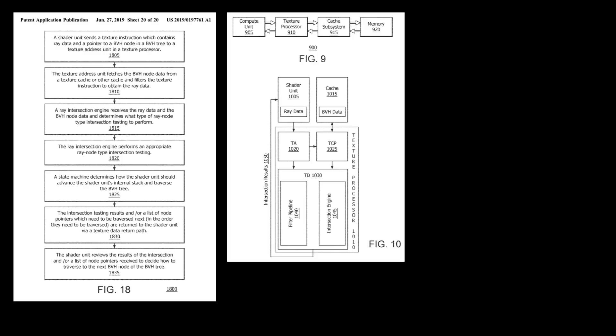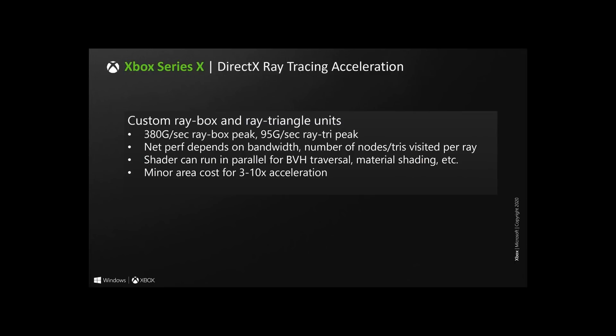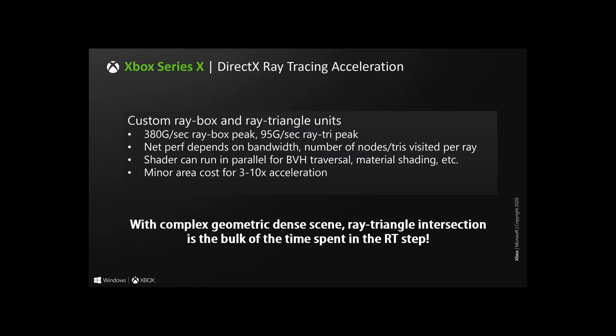The redesigned TMUs are now called texture processors, and each of them can accelerate 4 ray ops per clock. Looking at the Series X, Microsoft claims a peak performance of 380 giga ray box and 95 giga ray triangles per second. This figure derives from each compute unit having 4 texture processors, with 52 compute units clocked at 1.825 GHz. A simple multiplication arrives at the 380 giga ray box figure. However, a ray triangle intersection calculation is much more intensive than ray traversal — here we see a 1 to 4 ratio for the new unit. In a complex game, the performance-limiting factor of the RT step will be the ray triangle intersection.